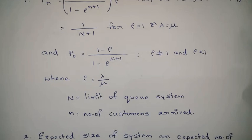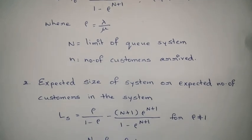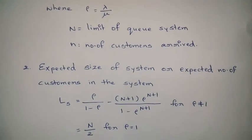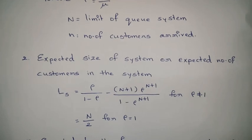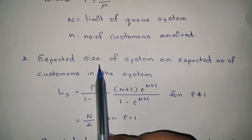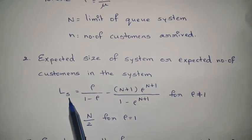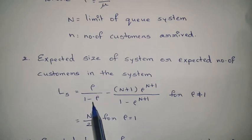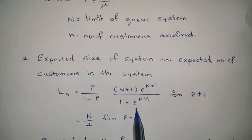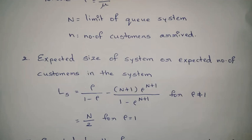The second formula is the expected size of the system, or expected number of customers in the system, denoted L_s. L_s equals ρ/(1 − ρ) − (N+1)ρ^(N+1) / (1 − ρ^(N+1)). This formula applies when ρ ≠ 1. If ρ equals 1, then L_s = N/2.